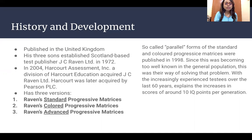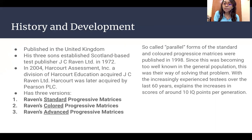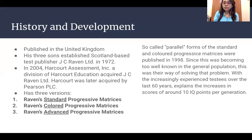The Raven's Progressive Matrices has three versions: the Standard, Colored, and Advanced. Parallel forms of the Standard and Color Progressive Matrices were published in 1998, since the test was becoming too well-known in the general population. With increasing test experience over the last 60 years, this explains the increases in scores of around 10 IQ points per generation.